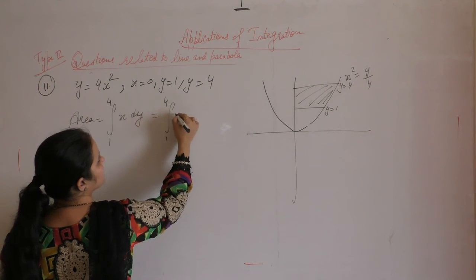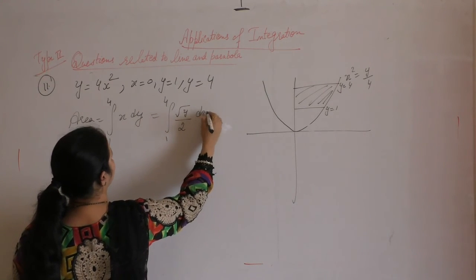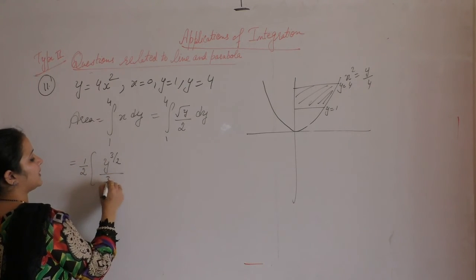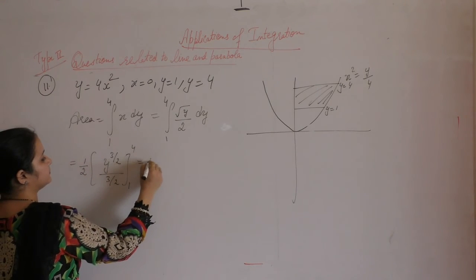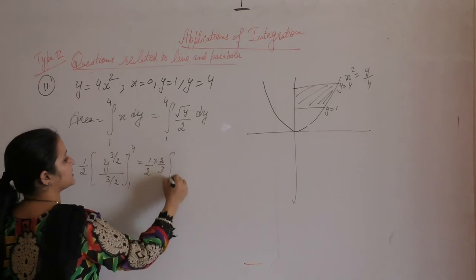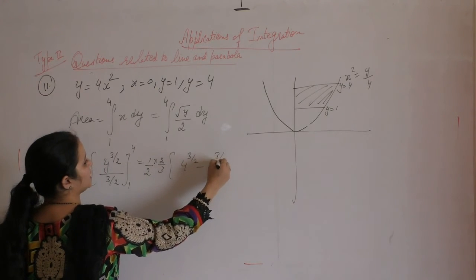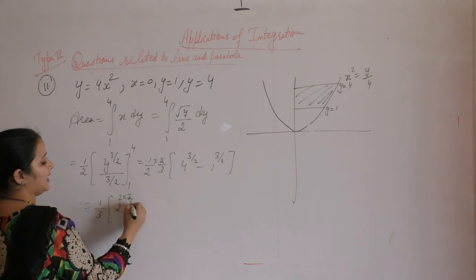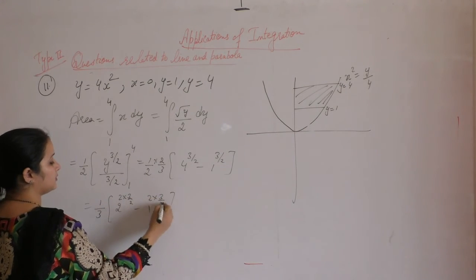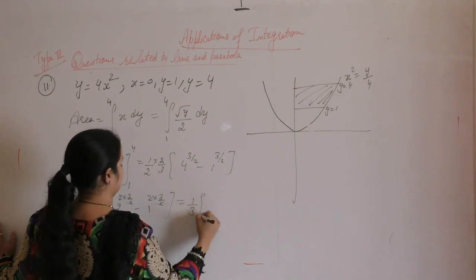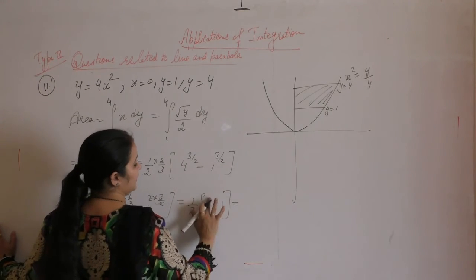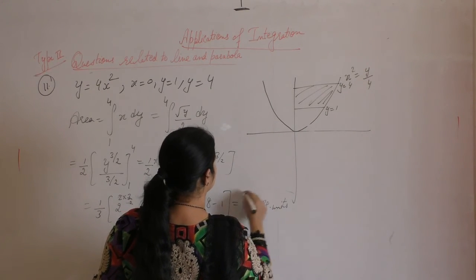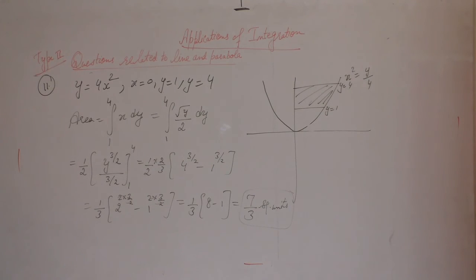The value of x is √y / 2, so the integral is (1/2) ∫y^(1/2) dy = (1/2) × [y^(3/2) / (3/2)] from 1 to 4 = (1/3) × [4^(3/2) − 1^(3/2)]. Writing 4 as 2² gives 2³ = 8, and 1³ = 1, so (1/3)(8 − 1) = 7/3 square units.